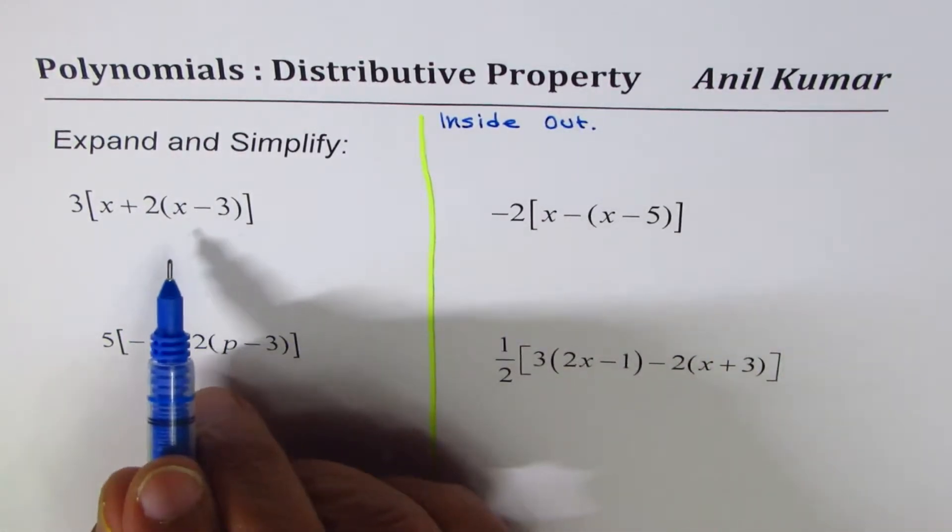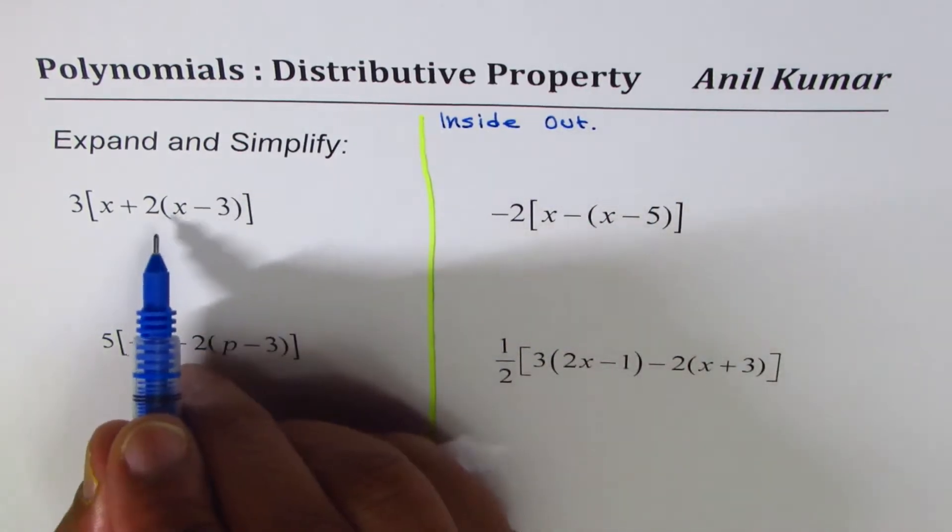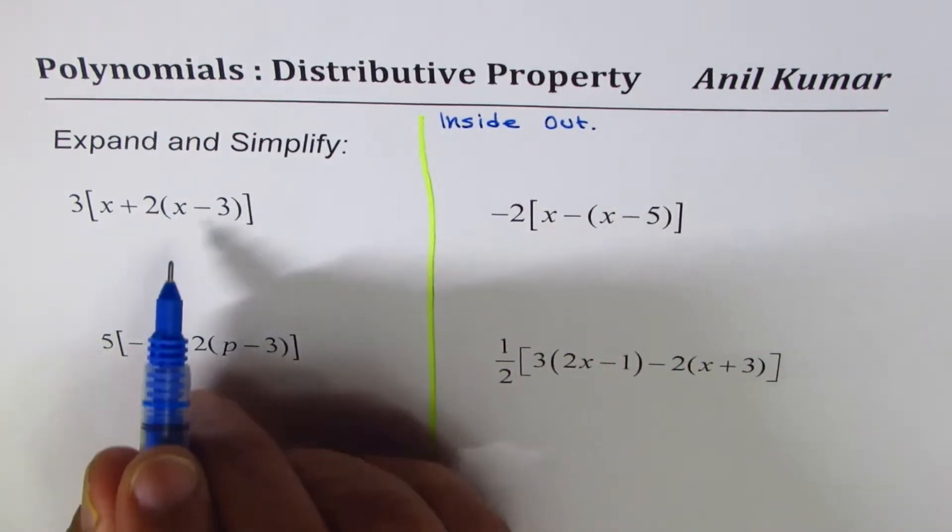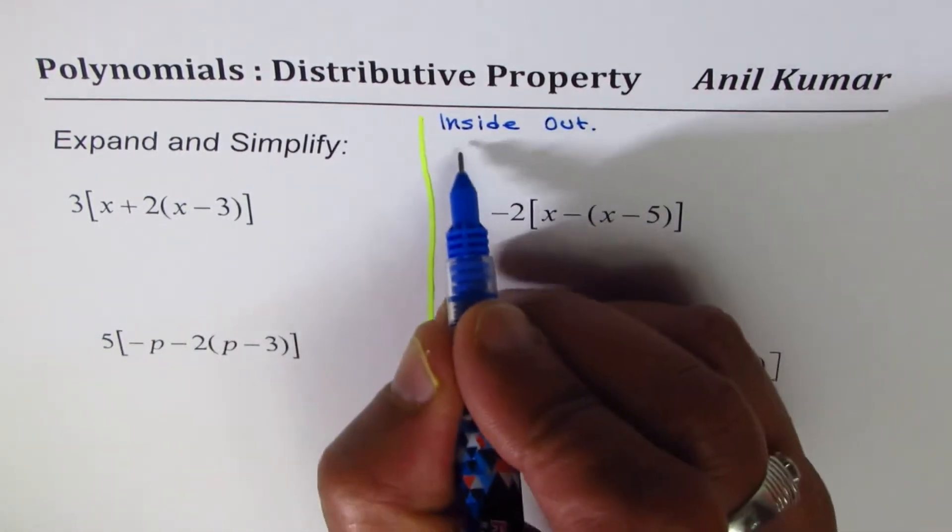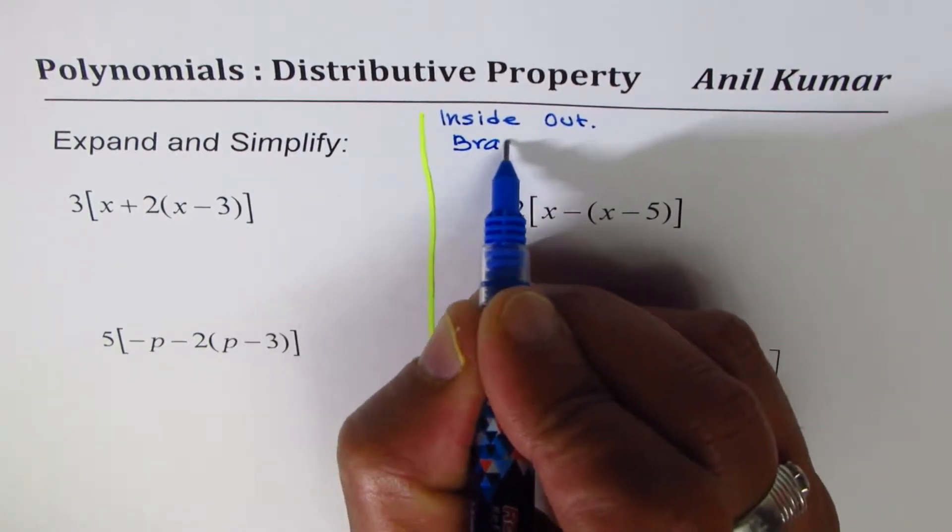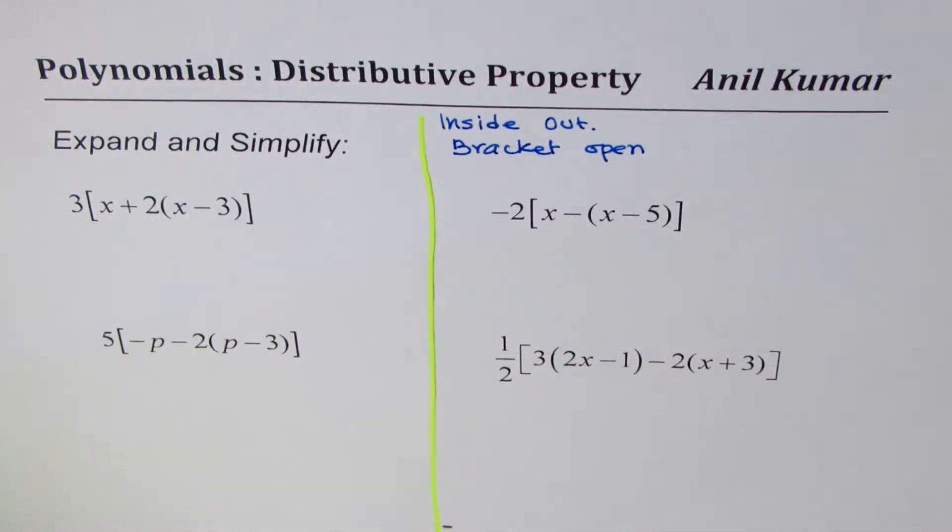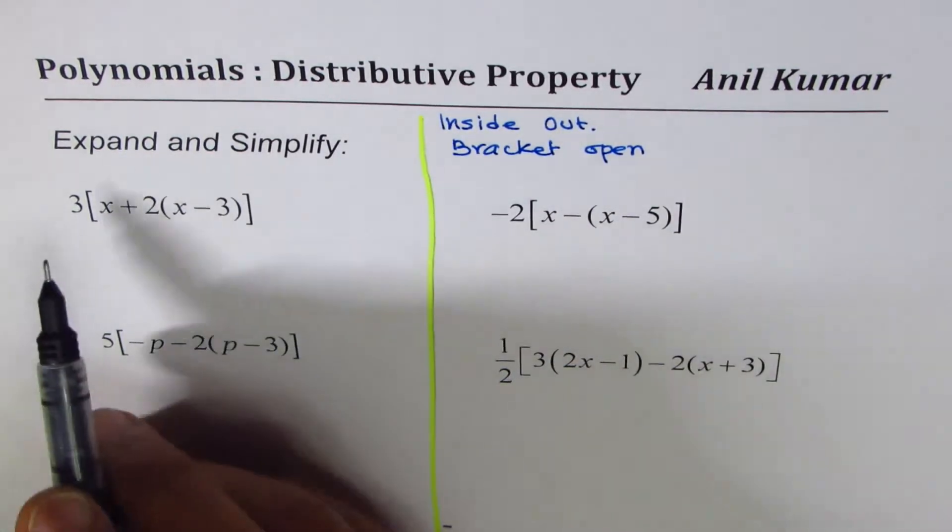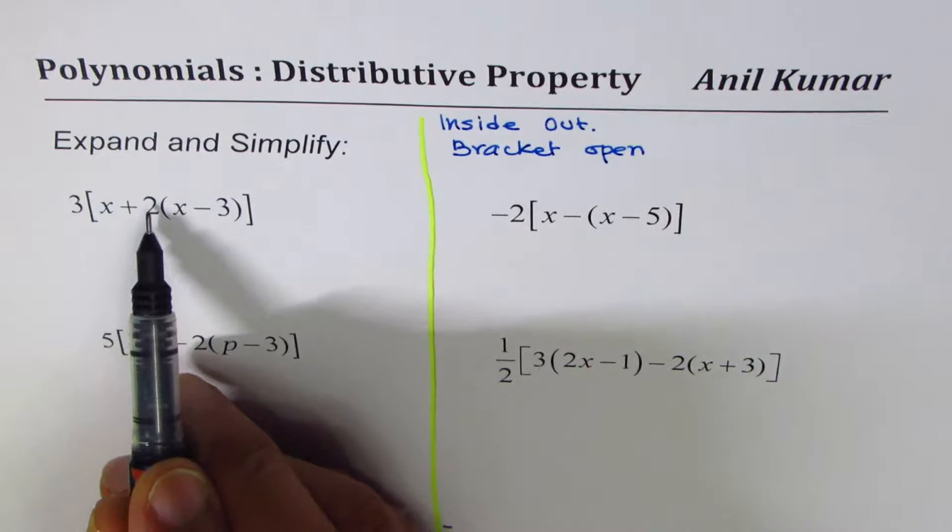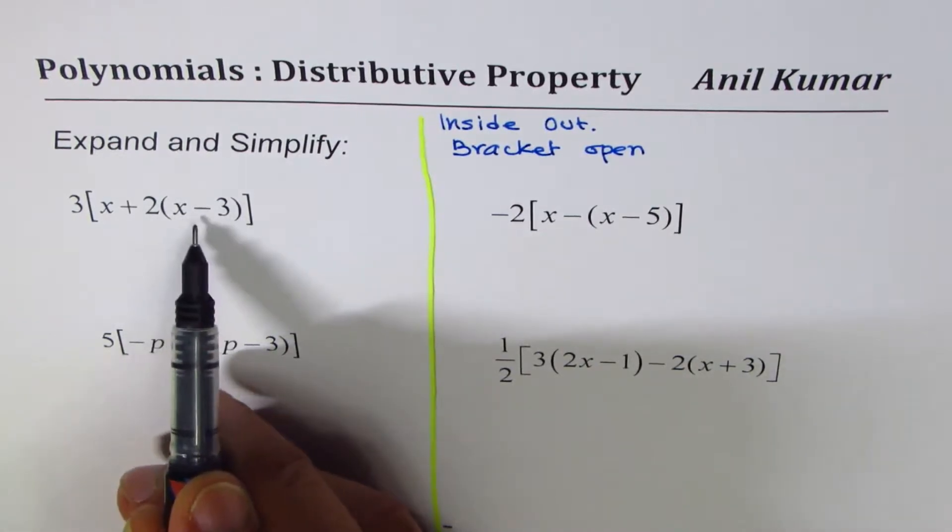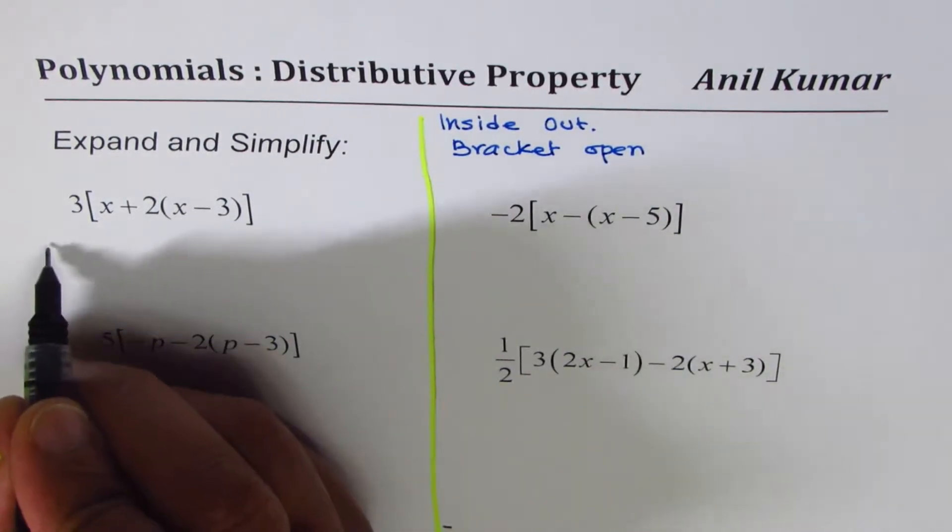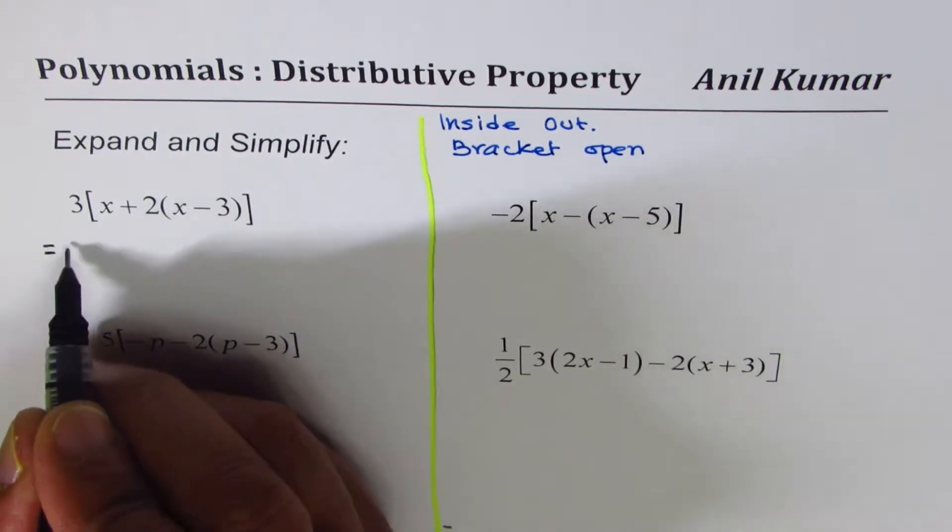Always follow the rules. Bracket open should be the first step. As you can see, the inside part is x plus 2 times x minus 3, and that's the inside bracket. So we'll begin by writing this as equal to 3 times square bracket x plus...